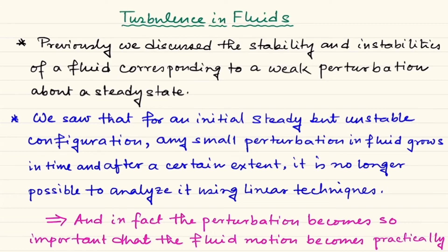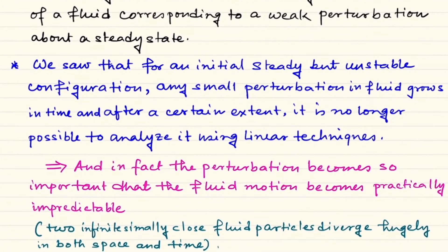Once the perturbation is no longer small, we cannot analyze the system using linear techniques and we are talking about general instability. The onset is linear instability, treated under linearization, but when perturbations grow larger we must take non-linear techniques into account, or resort to numerical treatment for those types of problems.